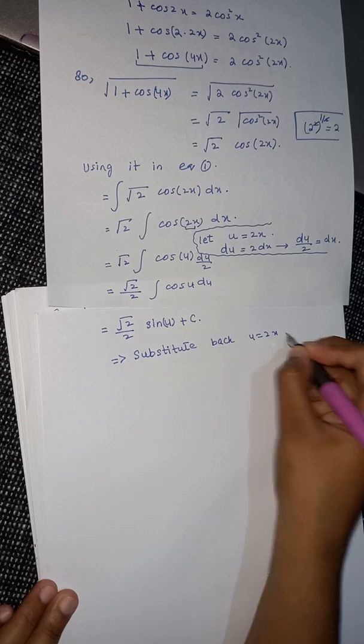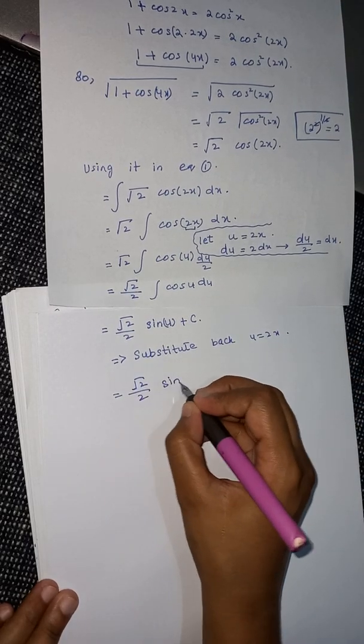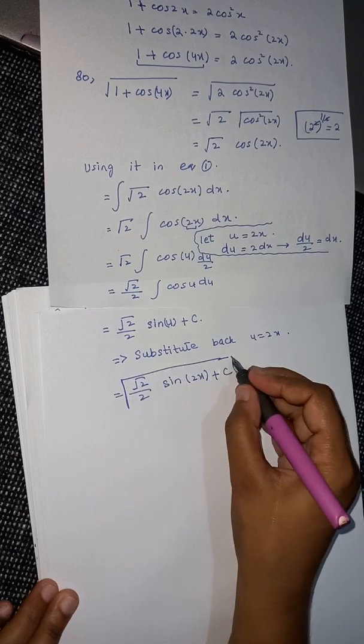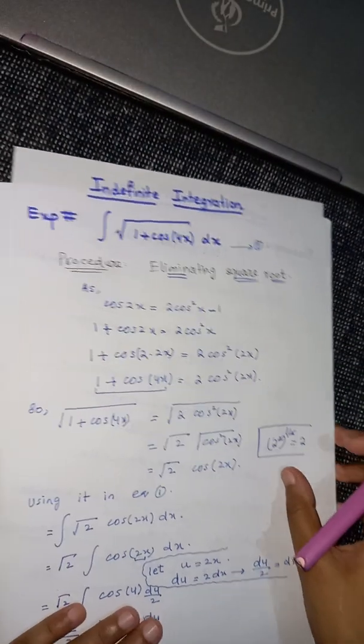It is equal to square root of 2 by 2 times sin u plus c. Now substitute back the value of u. Since u equals 2x, I will get square root of 2 divided by 2 times sin 2x plus c, and this is our required answer.